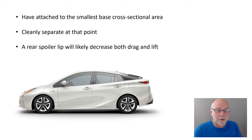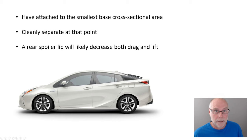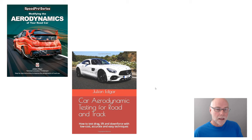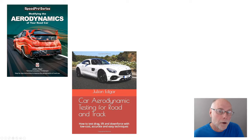If this Prius had an extended tail that went right over here above my head and right over here, it would get even lower drag. Cutting that off doesn't give the same drag — it gives increased drag — but obviously Toyota are making a practical car and can't have a tail three, four, or five metres long. If you want to read more about this sort of information, Modifying the Aerodynamics of Your Road Car, and if you want to be able to test the modifications you're carrying out on the road, Car Aerodynamic Testing for Road and Track. Thank you.